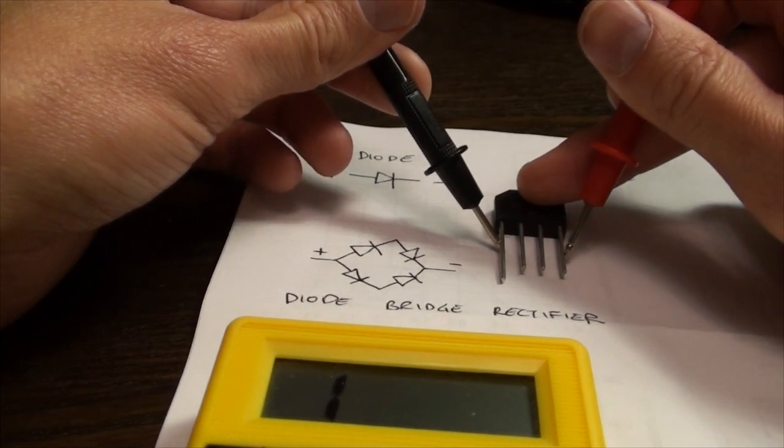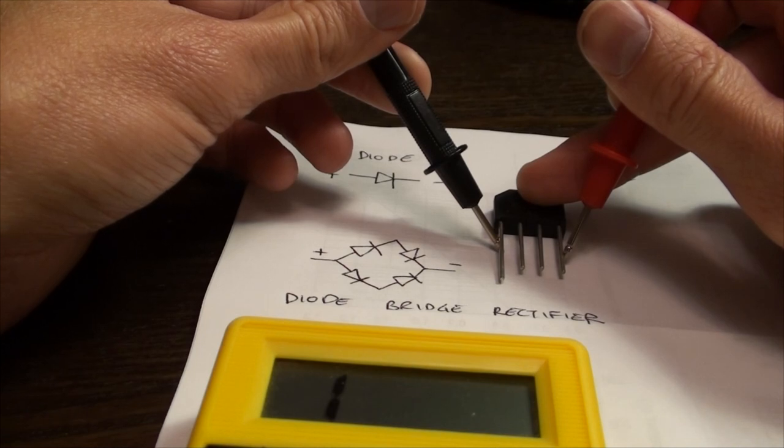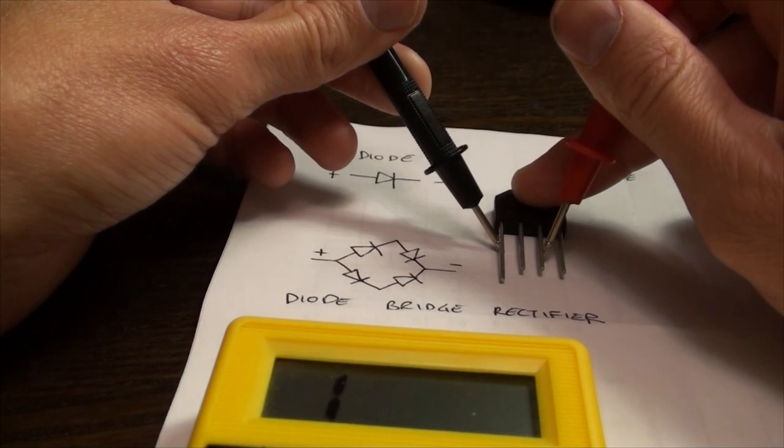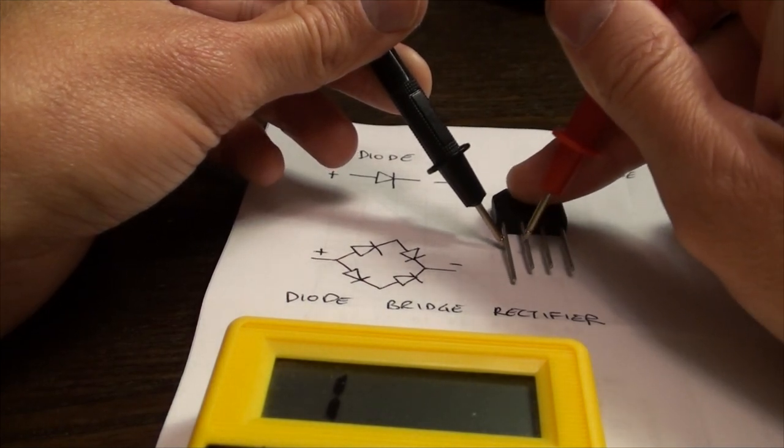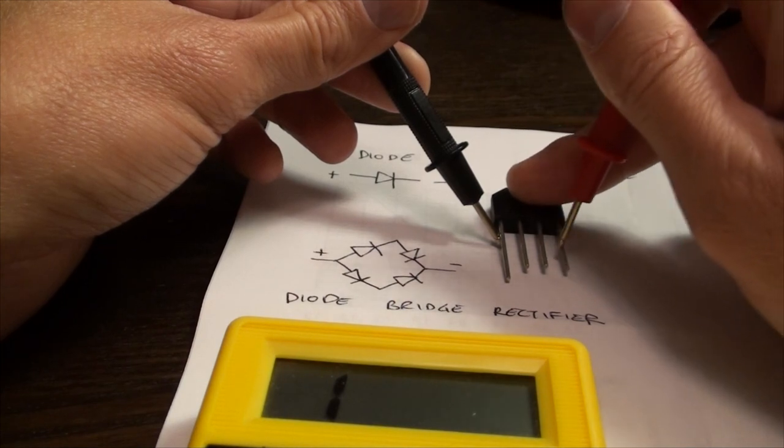In this instance, it still reads 1 or unlimited, so that it doesn't allow the flow of electricity in this direction. Switching the red probe to each of the different legs should all give the same reading.